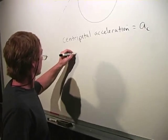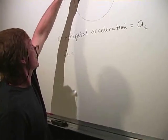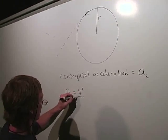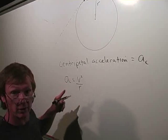It's a_c equals the velocity that I'm moving, squared, divided by the radius of the circle I'm moving in.